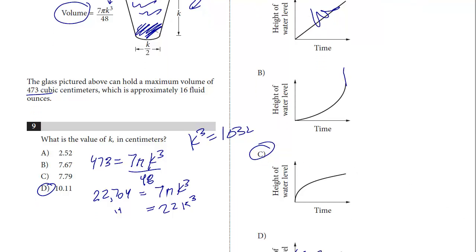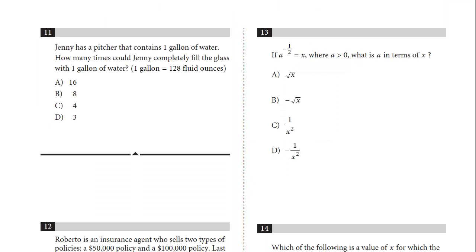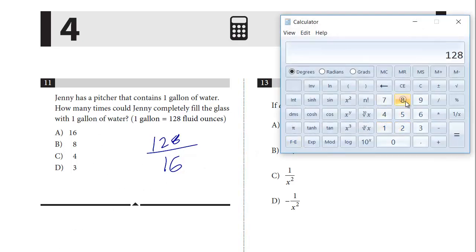Now let's do the next question, number 11 — still part of the same three-part question. Jenny has a pitcher that contains one gallon of water. How many times could Jenny completely fill the glass with one gallon of water? They tell us one gallon is 128 fluid ounces, and from the reference information above the glass holds 16 fluid ounces. They're both in the same units, so all you do is take 128 and divide it by 16. The answer is 8, choice B.